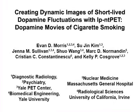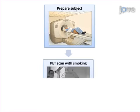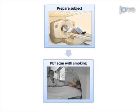The overall goal of this procedure is to image the brain's dopaminergic response to smoking cigarettes. This is accomplished by first imaging a smoker smoking in the PET scanner after the dopamine antagonist tracer 11C raclopride has been injected.